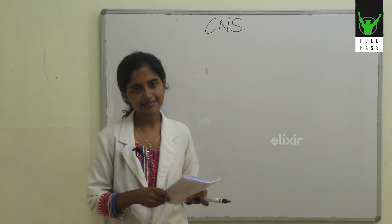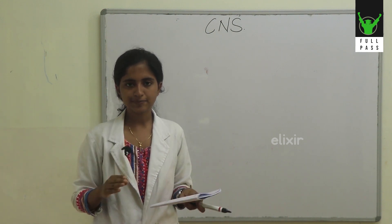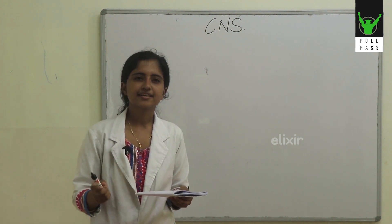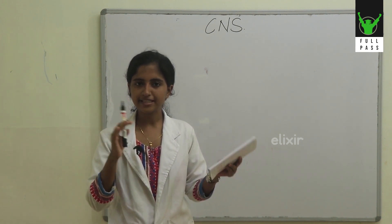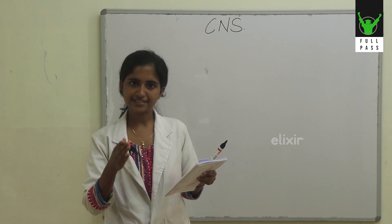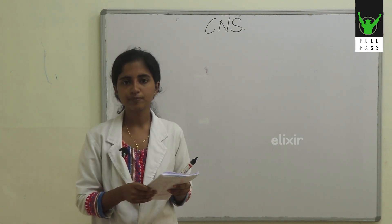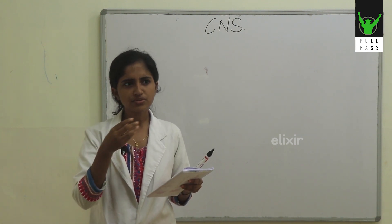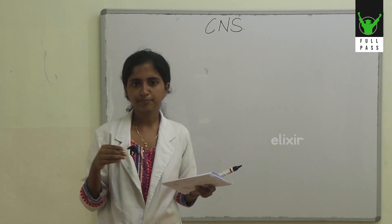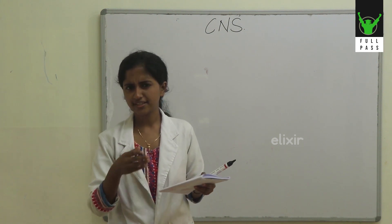About the pyramidal tract, we have the corticospinal tract as well as the corticobulbar tract, and their origin is mainly from the motor cortex present in the precentral gyrus in our frontal lobe. It also gets origin from other areas like the premotor areas and the supplementary motor areas.